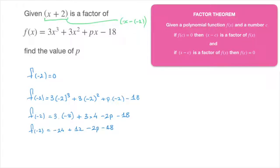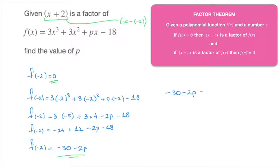Carrying on, we obtain f of negative 2 equals 3 times negative 8, which is negative 24, plus 3 times 4, which is 12, minus 2p minus 18. Simplifying as much as possible, we find f of negative 2 equals negative 30 minus 2p. But from the factor theorem, f of negative 2 must equal 0, so negative 30 minus 2p equals 0, which leads to negative 30 equals 2p, and therefore p equals negative 15.